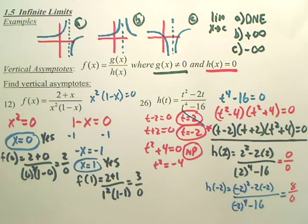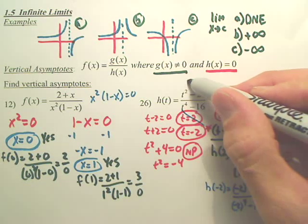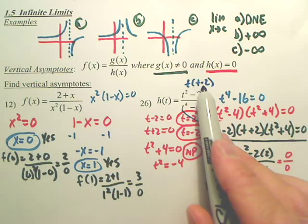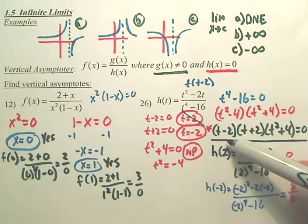Now, let me show you something. We could also, besides doing this constant over zero kind of idea, you could have also done this. If I factor the top, do you see that right there? Take a t out, t minus two. Do you see the t minus two canceling with this t minus two?